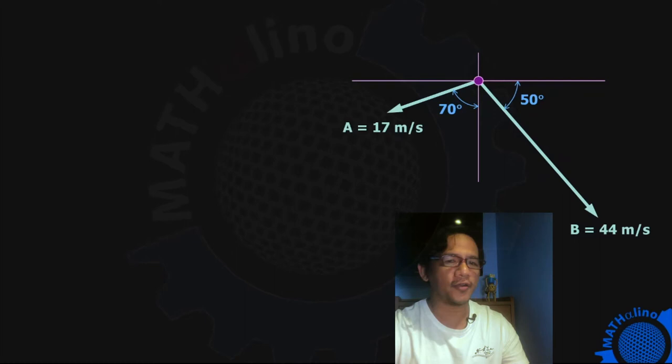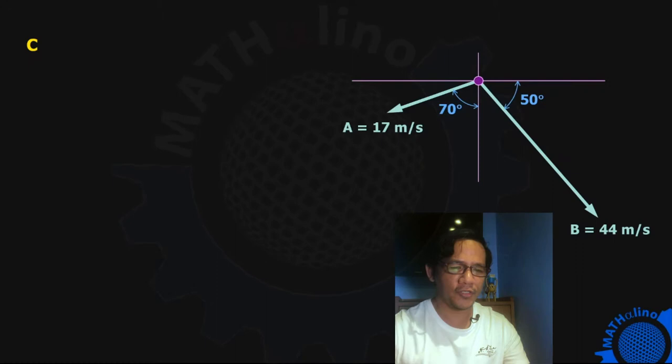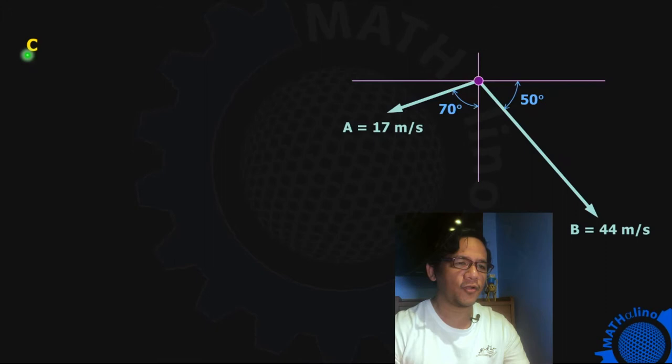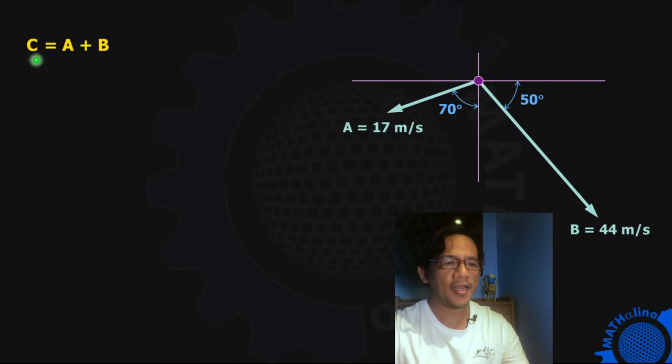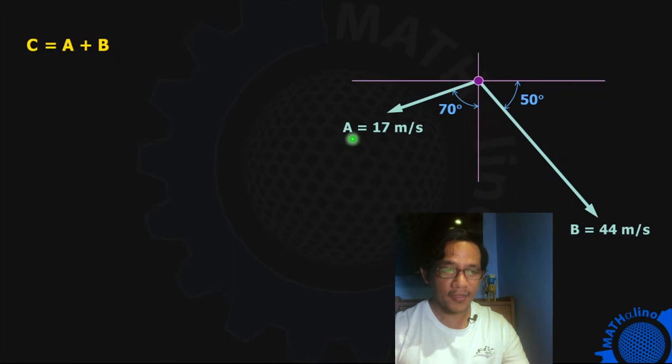Let us say that the sum of these two vectors, vector A and vector B, is — let us call that vector C. Therefore, we're going to sum up vector A plus vector B. Now, to do the calculation, we're going to find the rotation of these two vectors.